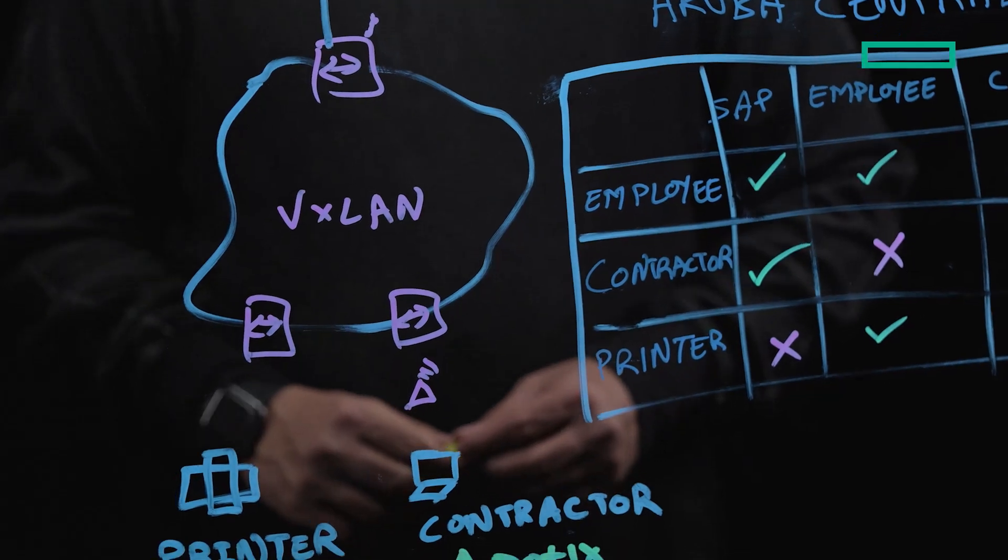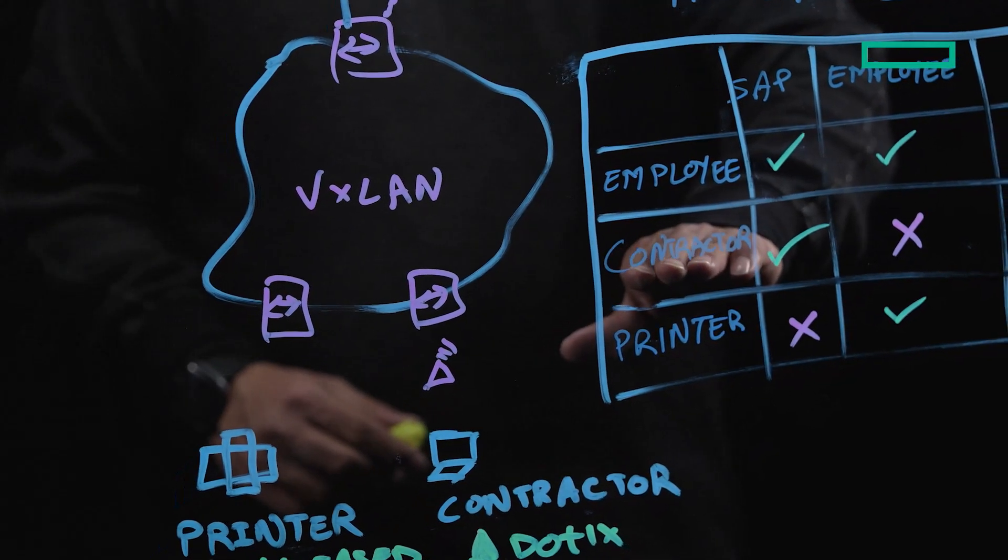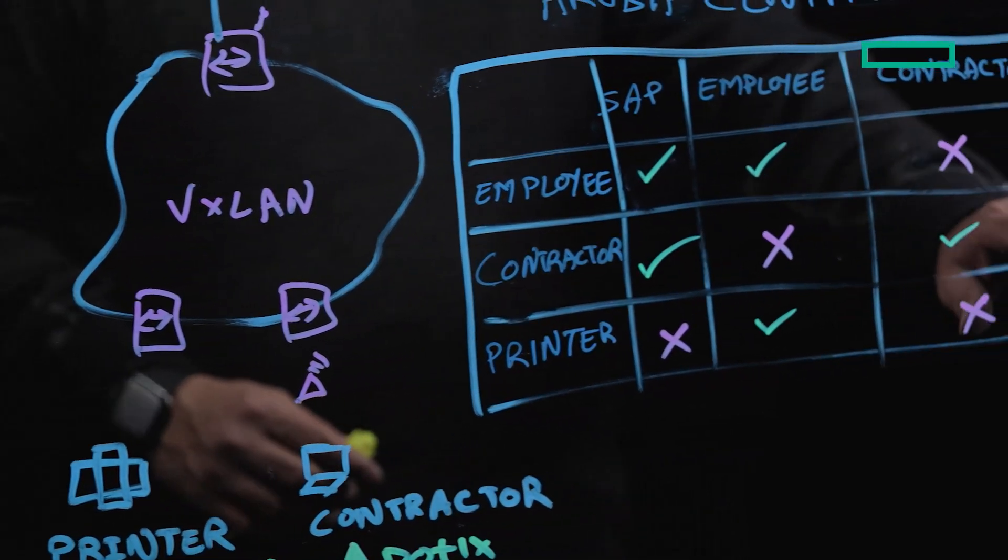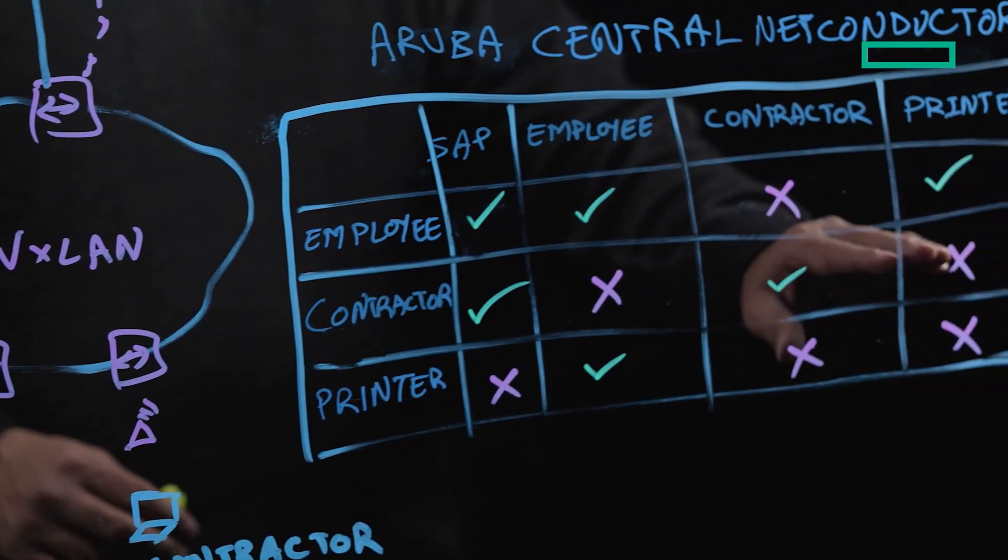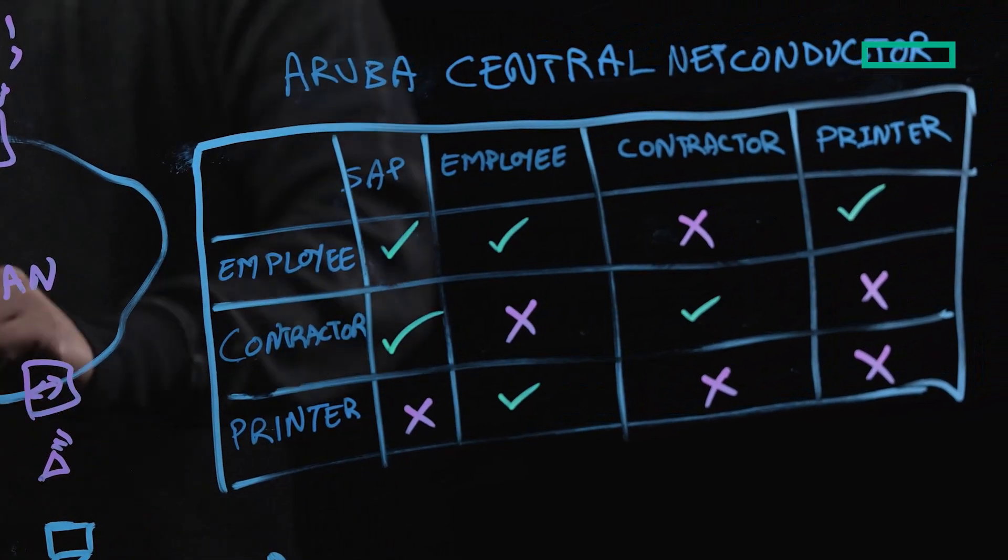In this simple example, we have a contractor trying to access the printer, but based on the policy, the traffic is being dropped within the LAN segment.